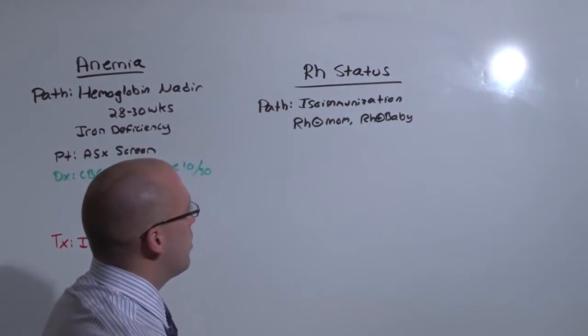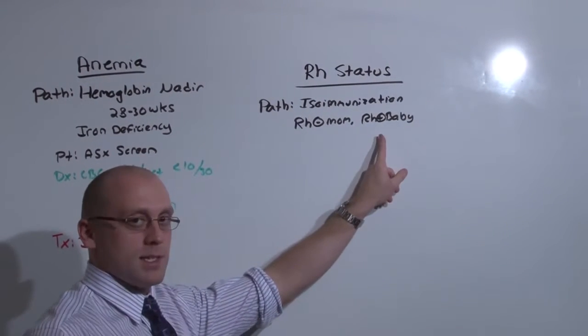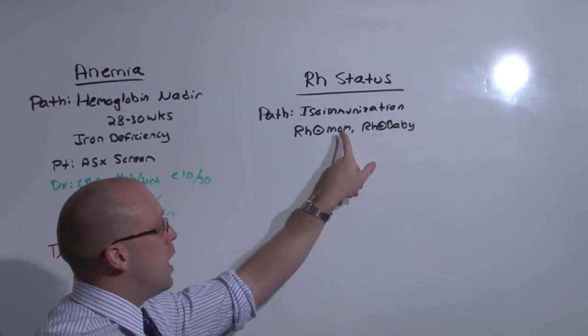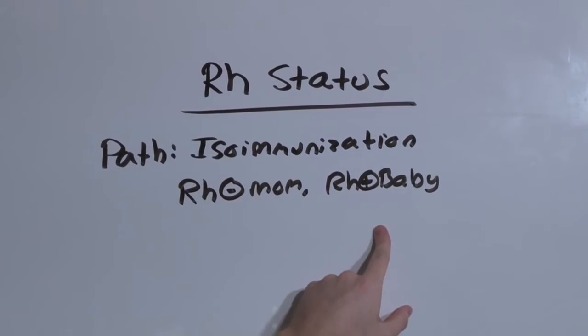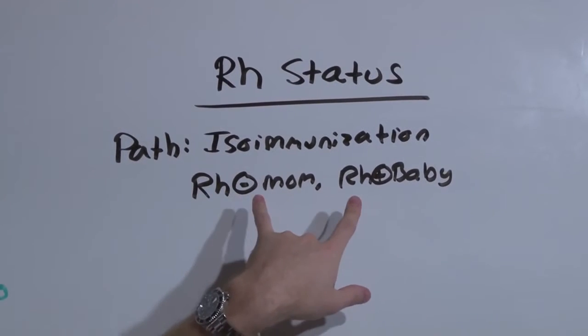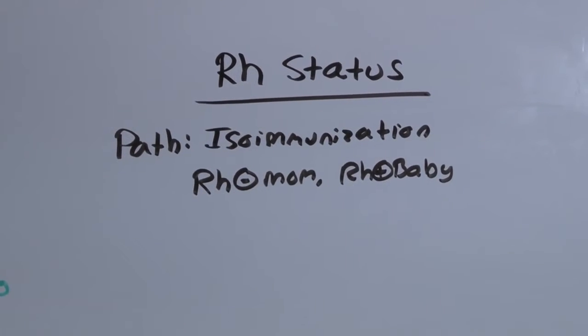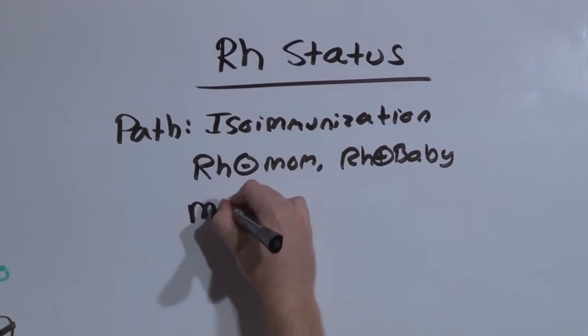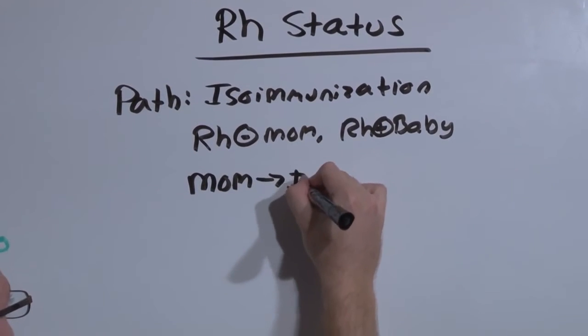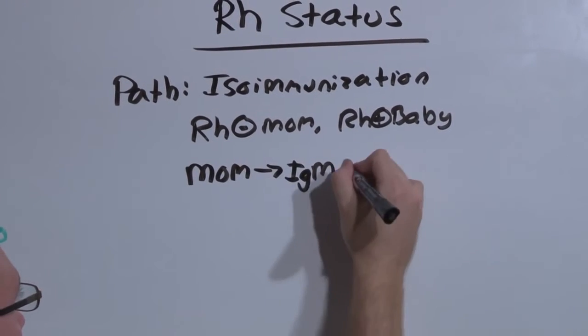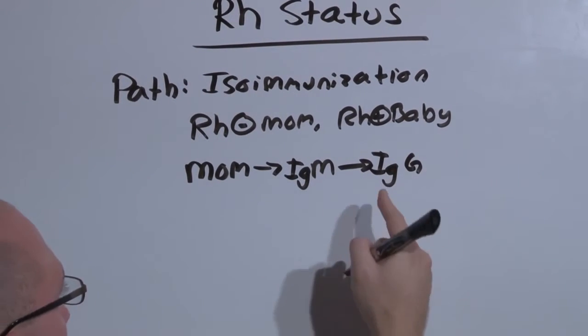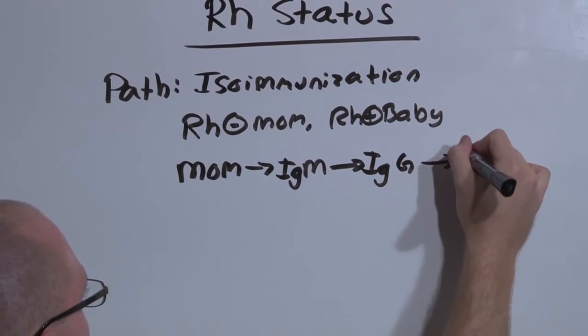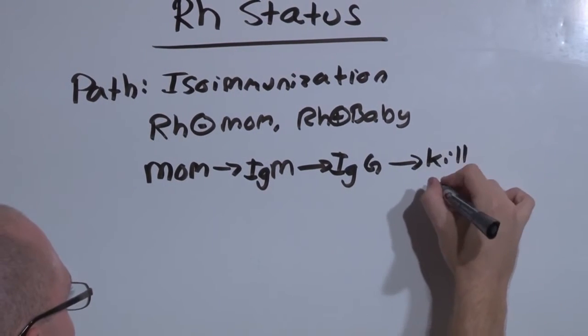That is, dad is RH positive and baby is RH positive. Mom's immune system sees that in baby, thinks it's a foreign antigen, develops antibodies against it. This can only happen when mom's blood mixes with baby's blood, which means that it can only happen after delivery or a procedure. And what happens is that in mom, she develops IgM, which cannot cross the placenta. But eventually, the immune system develops IgG, which can cross the placenta, which will kill baby or cause a fetal anemia.